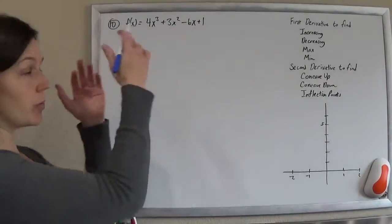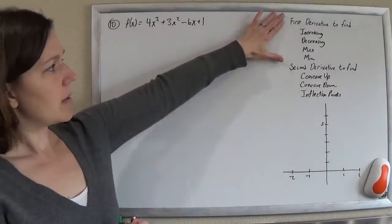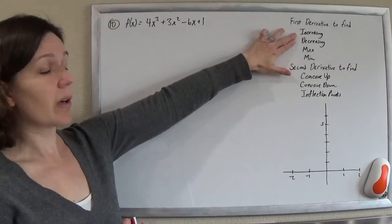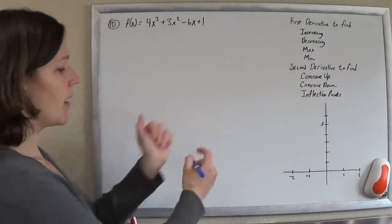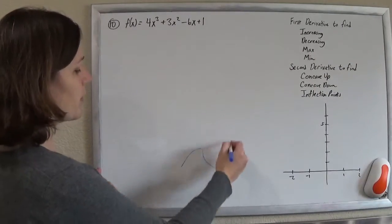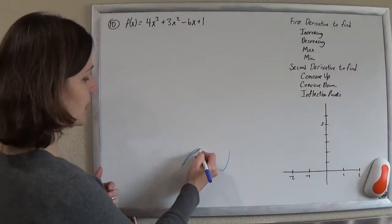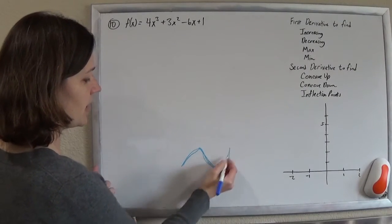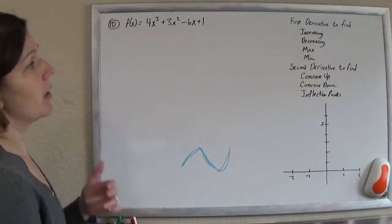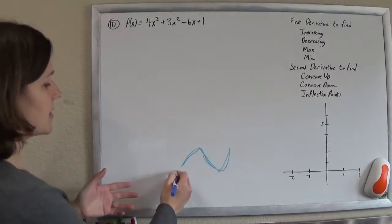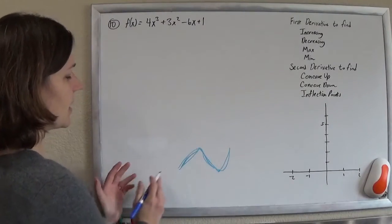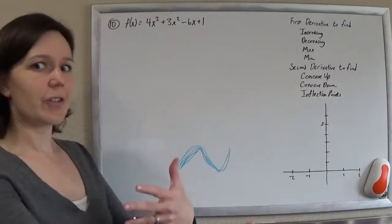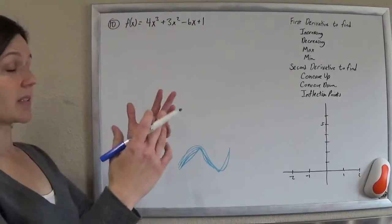So when we're using calculus to graph something, keep this guy in mind. We're going to use our first derivative. It will tell us where it's increasing and decreasing, and therefore where the maxes and the mins are. So if it's increasing and then decreasing, you've got a max. And then if it goes from decreasing to increasing, it's got a min. So your first derivative finds your equations of the tangent lines, which tells you about the slopes of the curves, which therefore tells you increasing and decreasing, which therefore tells you max and min.